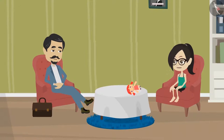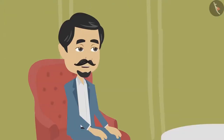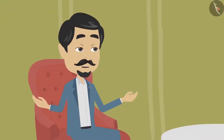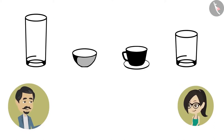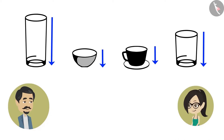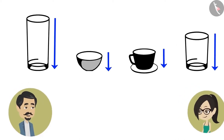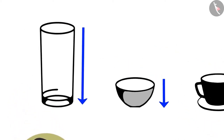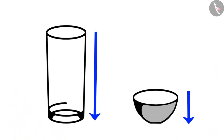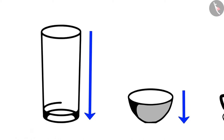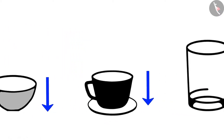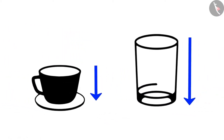Oh, so it is not necessary that we only measure the depth of those objects which are below ground. Yes, Vandana. For instance, depth is also measured in kitchen utensils because they are filled with goods. The deeper the utensil, the more quantity it can hold. The depth of a vessel helps in determining what could be stored in it.